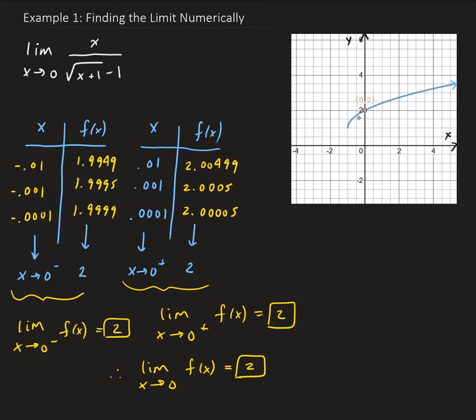In a separate video, we're going to show how to do this algebraically. That will involve rationalizing the denominator, and then things will cancel out, allowing us to use what's called direct substitution. But in the meantime, we're trying to understand limits from a graphical standpoint.